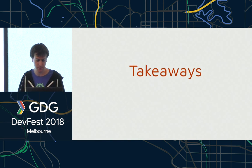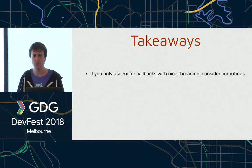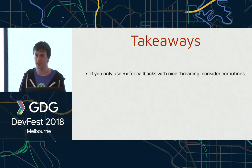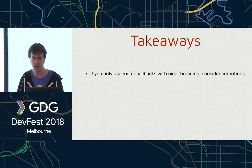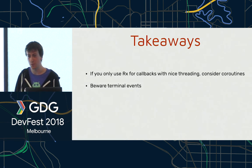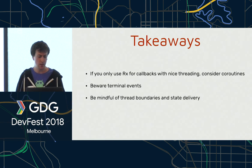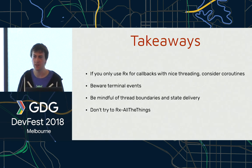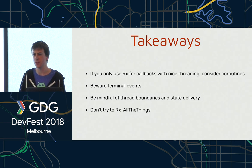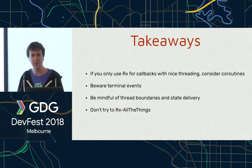Some final takeaways: if you're only using RxJava for callbacks with neat threading, maybe consider not doing it — consider if coroutines are going to solve all of your problems and swap to them, they're far simpler. But if you've gone down the rabbit hole and are using RxJava to compose a lot of asynchronous stuff throughout your app, be very careful of terminal events because you can end up poisoning everything and wondering why nothing is coming through your stream. Be mindful of thread boundaries, making sure state restores correctly. And don't Rx all the things — RxJava is fun and kind of addictive, but you may not be writing the nicest code.